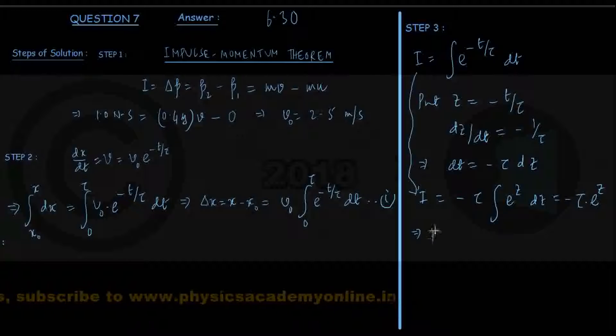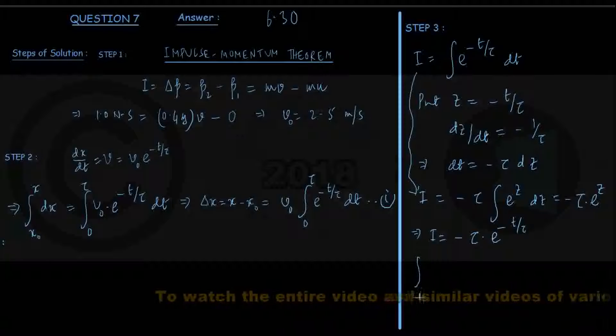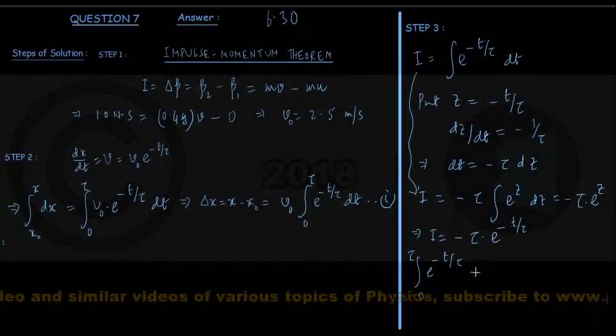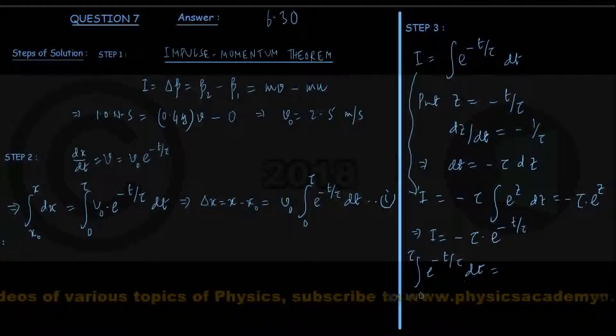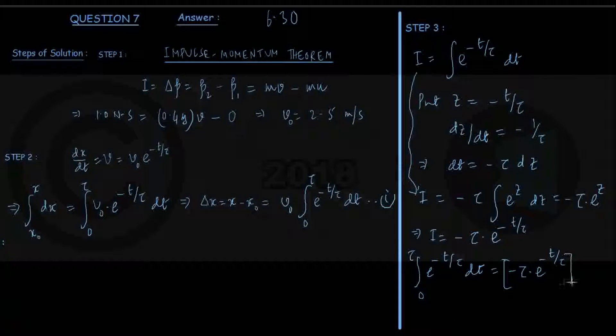We can write finally I equals minus tau times e to the power, what was z, minus t by tau. That is the indefinite integral here. So once we get this, let us evaluate this definite integral. We can write between the limits 0 and tau, e to the power minus t by tau dt. We already got this result in indefinite integral. So I am keeping it inside square brackets: minus tau times e to the power minus t by tau kept within square brackets and the limits written outside.